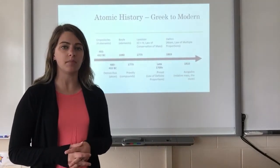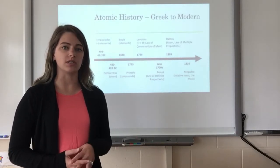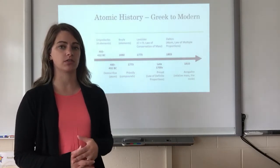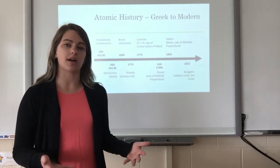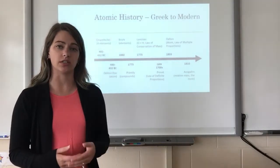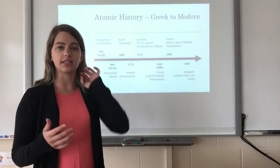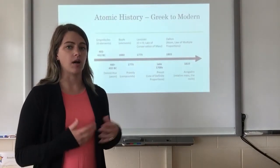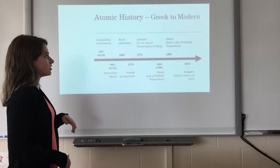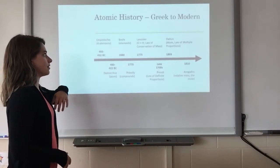In this video we're going to go more in depth about our atomic model and the history of how our atomic model was developed and the different experiments that led to the different types of models. Our modern atomic model actually starts in 1803 with John Dalton, but we're going to back up a little bit before that because atoms were part of a scientific theory long before Dalton. Starting back around 492 to 432 BC, we start with a Greek scientist named Empedocles.